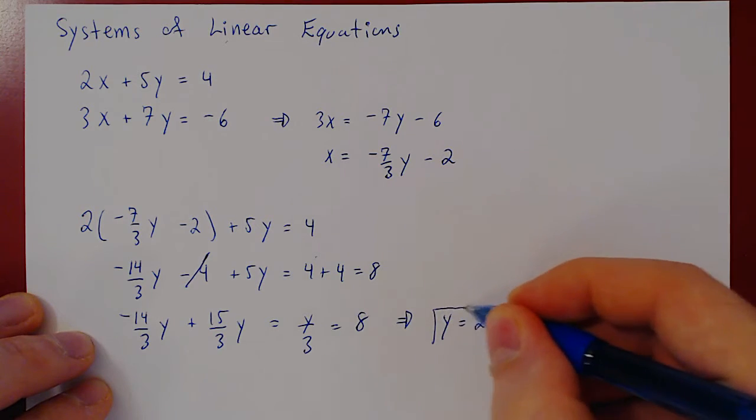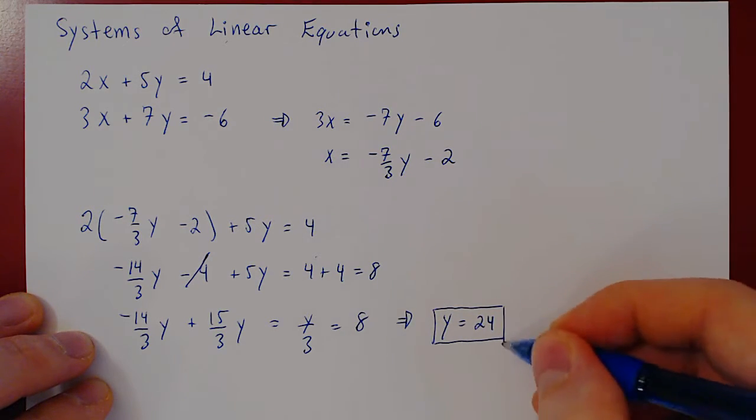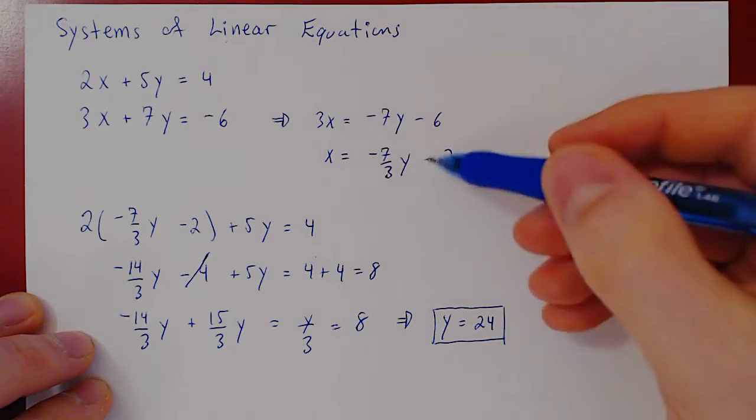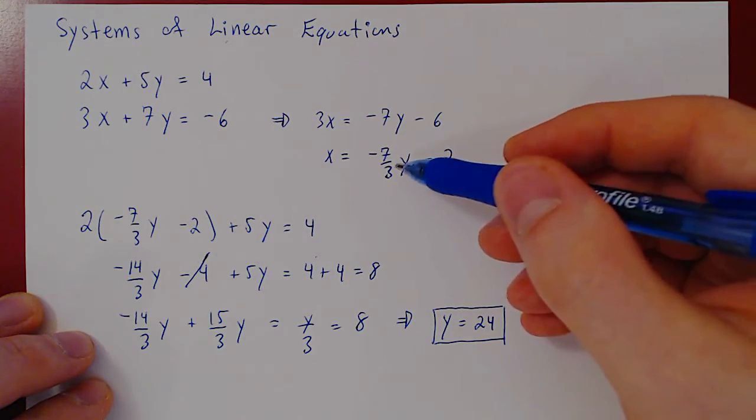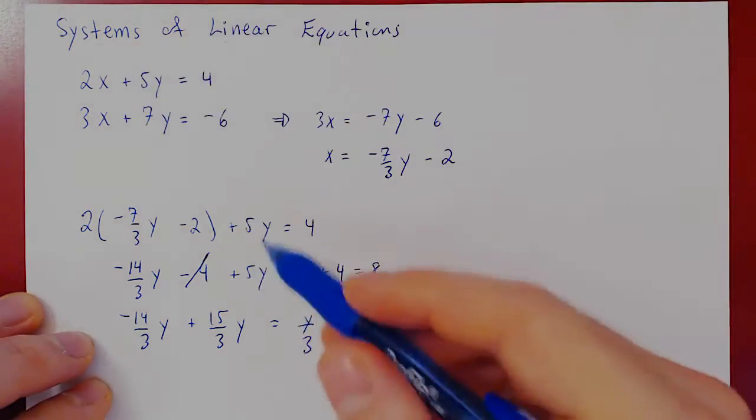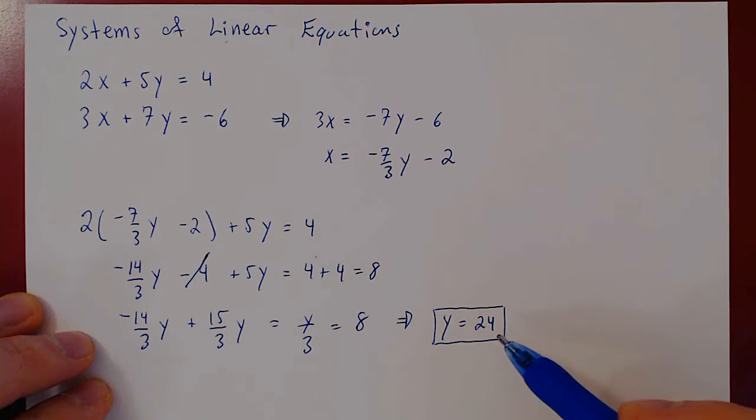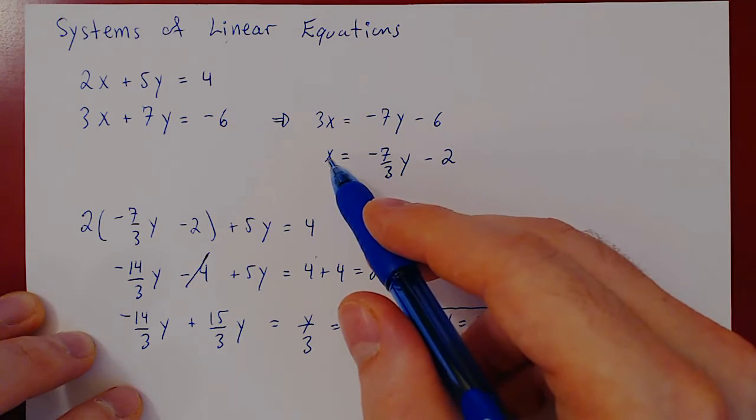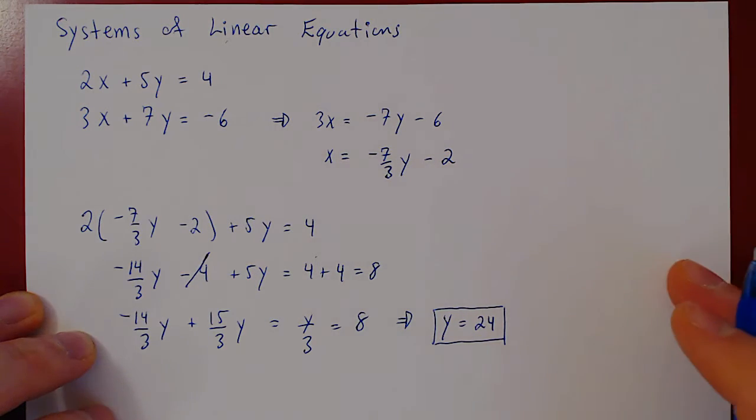So we have found a unique value for y. By solving for x in the second equation as a function of y, replacing in the first equation, we found that y must be 24. Well, we can easily now get the value of x by replacing y in here by 24.